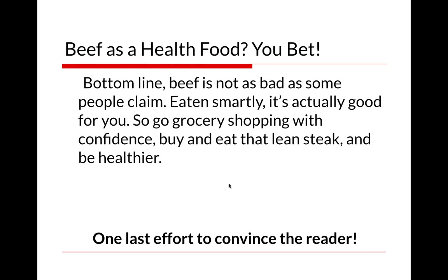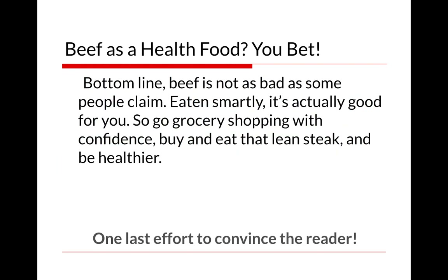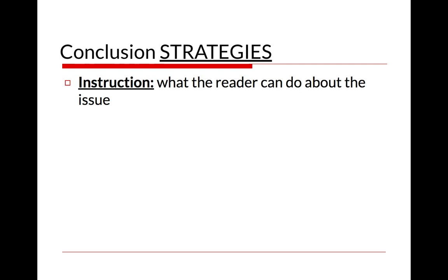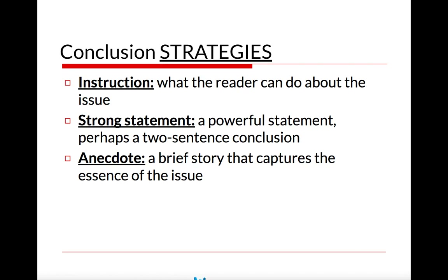In addition to knowing these purposes, Mr. O'Brien and I wanted to share five strategies that are very helpful when writing an argumentative conclusion. The first is instruction — teaching the reader what they can do about the issue in your essay. The second is making a strong or powerful statement — something bold or surprising to some readers. This will probably be a shorter conclusion, maybe just two sentences, explaining why the issue is important and what we should do about it.